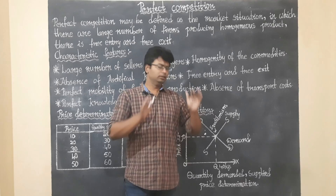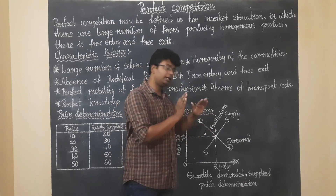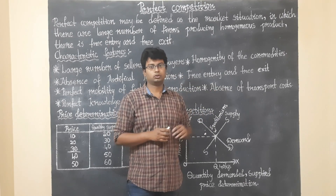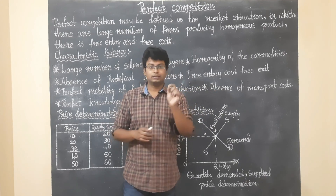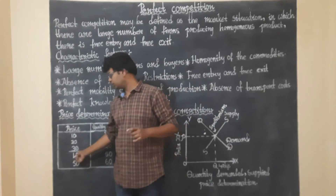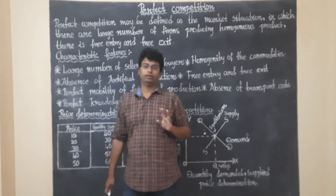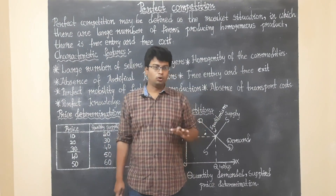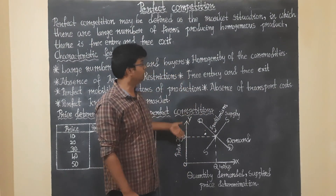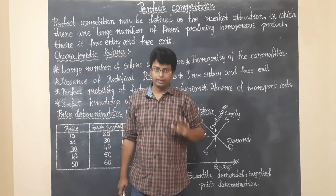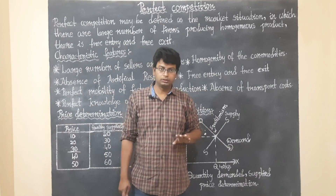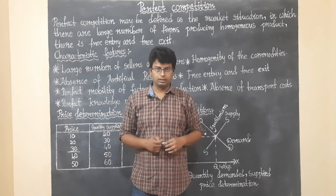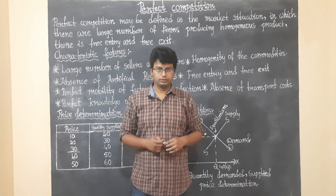So the point of 30 rupees is the equilibrium point. This gives us a clear idea of price determination under perfect competition. Do share and subscribe to our channel. Thank you, students.